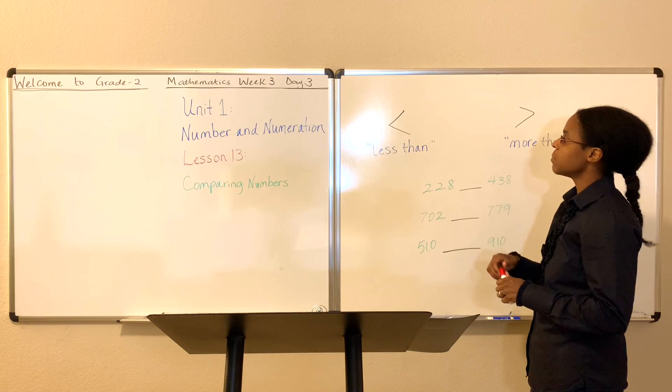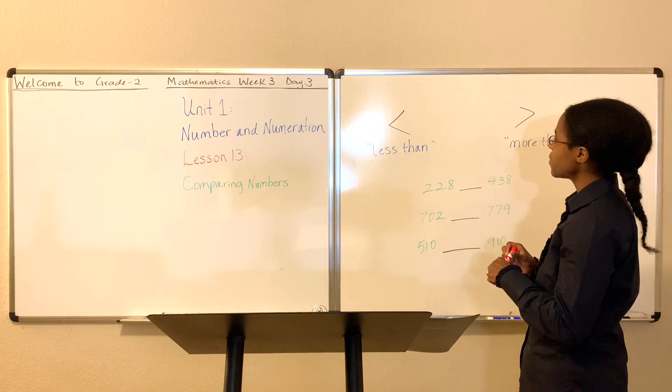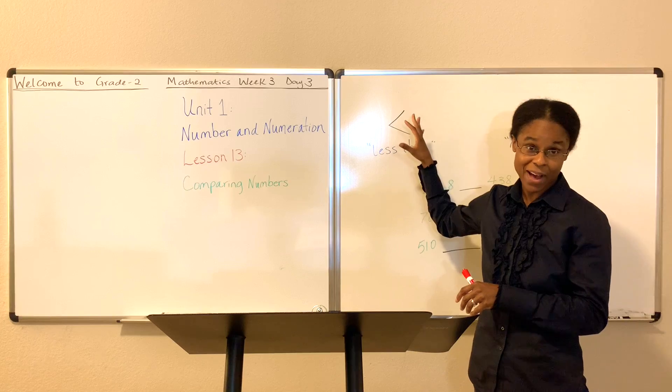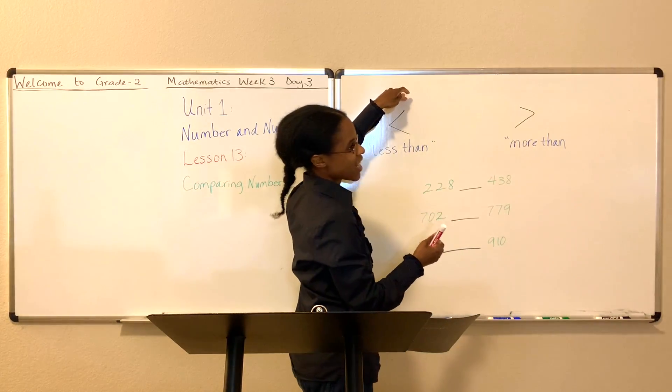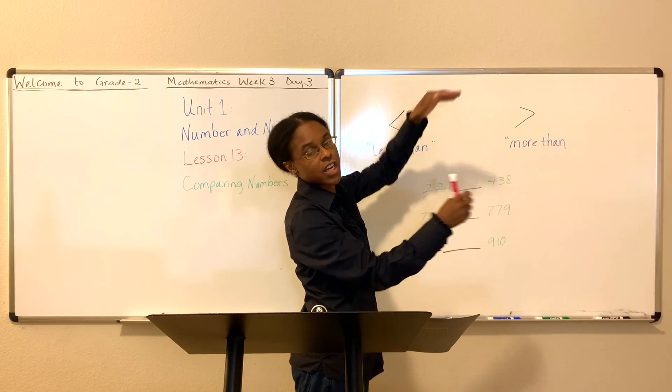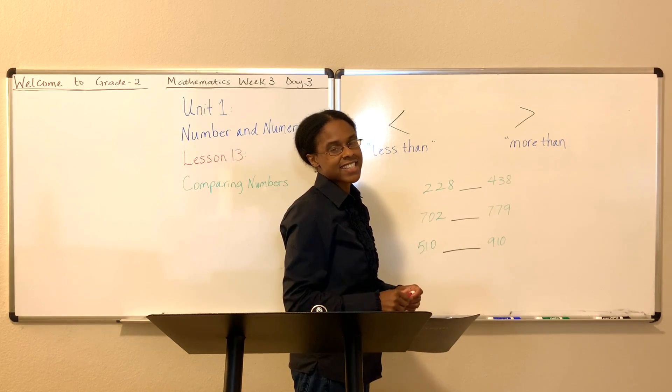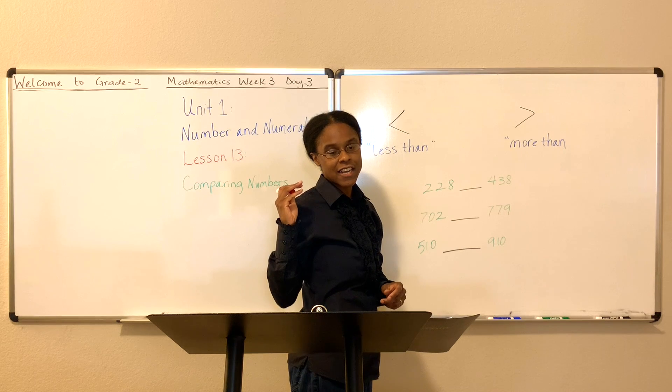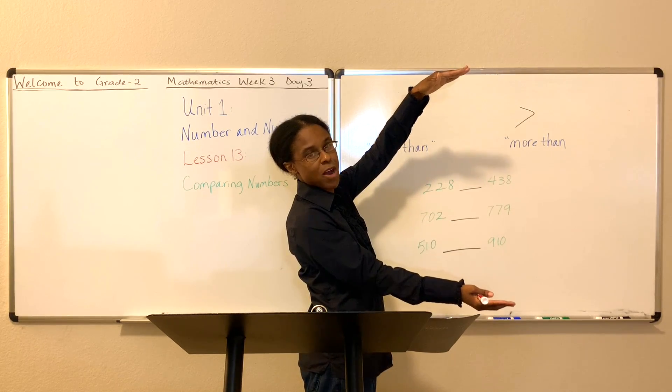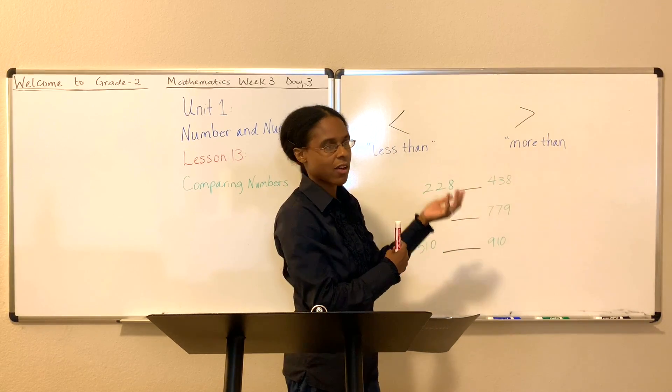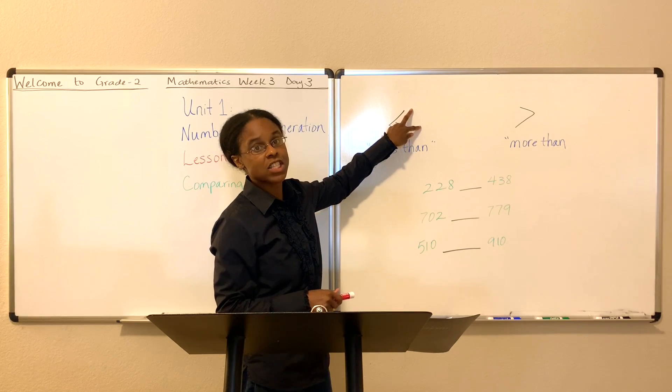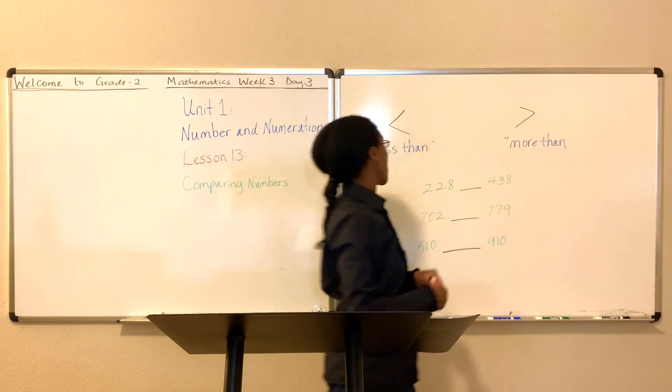One way that you can remember this is that the opening of the mouth, you can imagine that this is a crocodile's mouth. And so the alligator or crocodile opens his mouth this way because he wants to eat the bigger number. He doesn't want the smaller number. Let's say we're comparing the number five to ten. He doesn't want five fish or five toads. He wants the number in front of him, which is actually ten. So he opens his mouth to get the bigger number because he's super greedy. He wants the number ten, he does not want the number five.